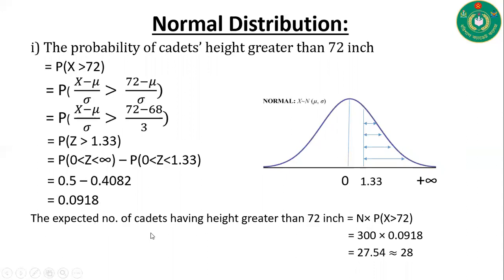The expected number of cadets having height greater than 72 inches equals n × P(x > 72) = 300 × 0.0918 = 28. So the expected number of cadets having heights greater than 72 inches is 28.